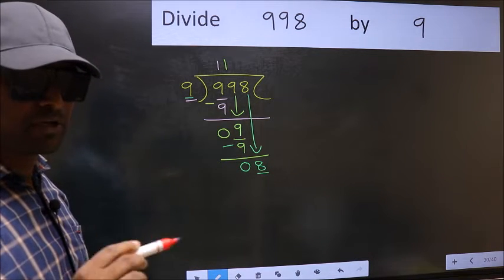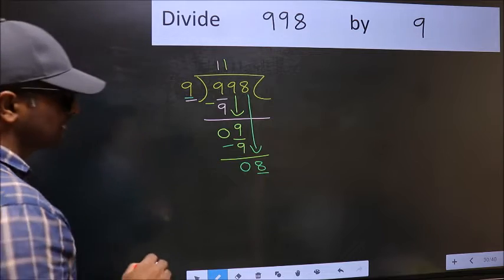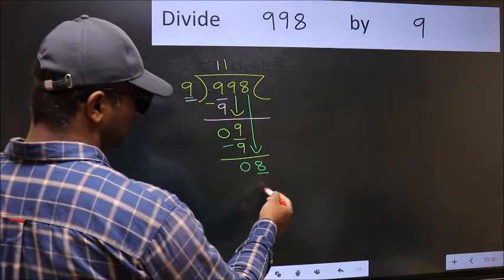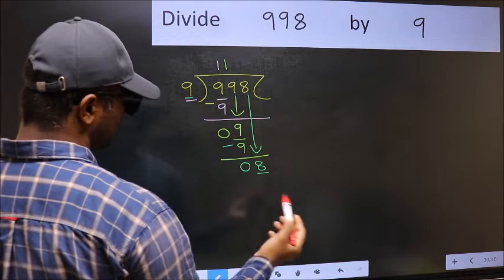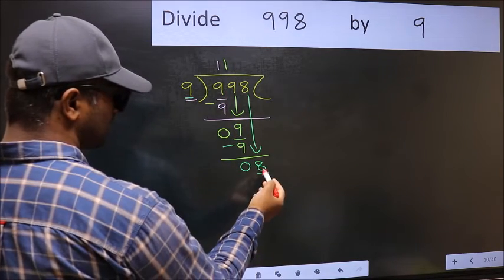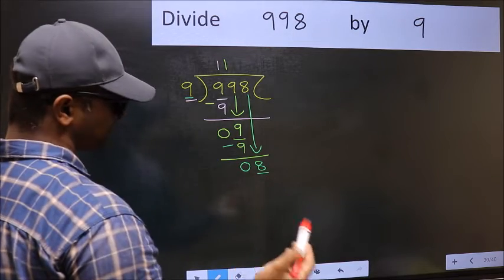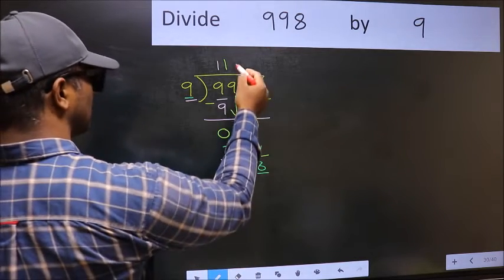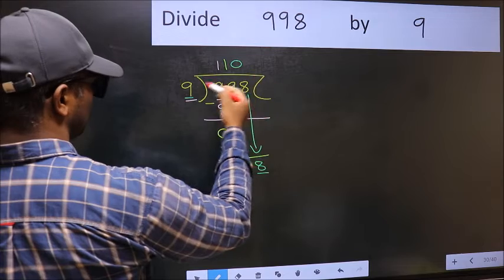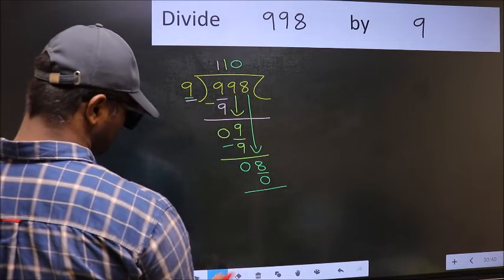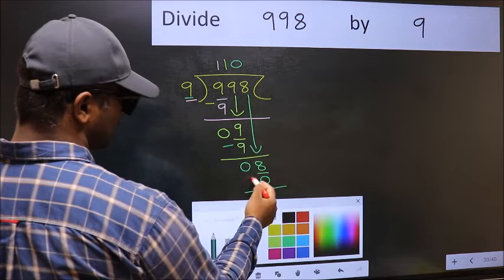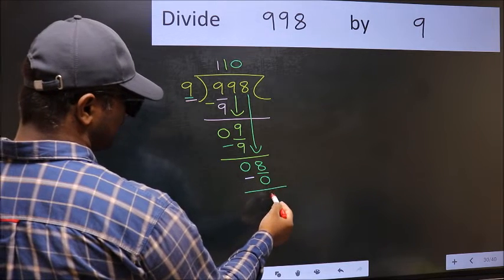Instead, what you should think of doing is, which number should we take here? If I take 1, we will get 9. But 9 is larger than 8. So what we should do is, we should take 0. So 9 into 0, 0. Now you should subtract. 8 minus 0, 8.